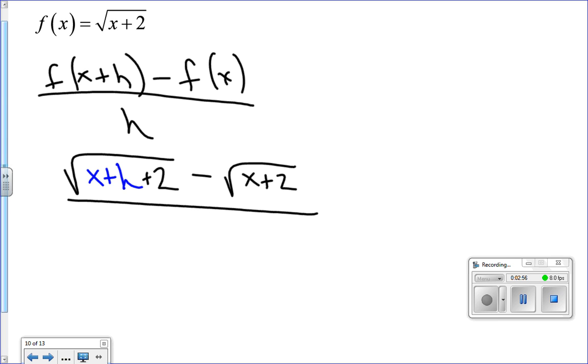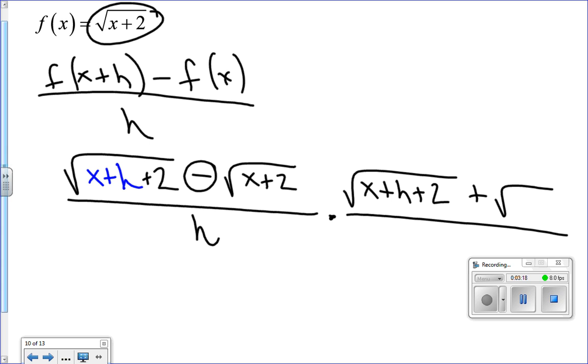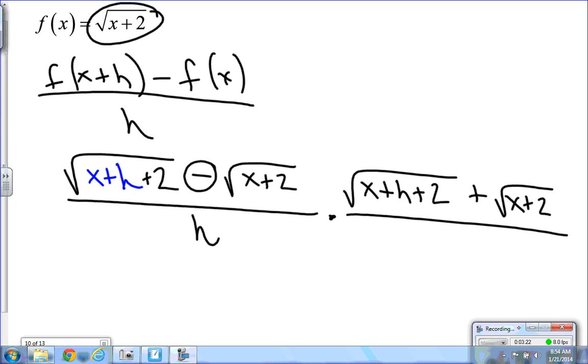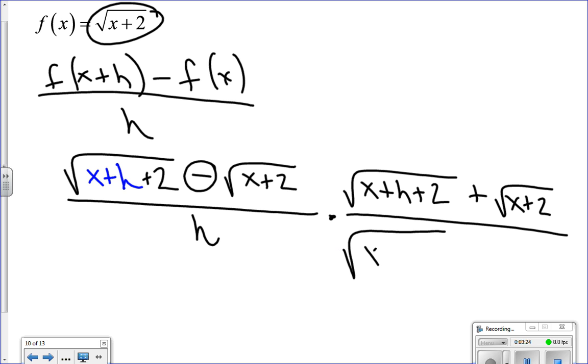With this particular type of function, with square root functions, you're going to want to multiply by the conjugate of the numerator. So it looks like this: I'm going to multiply by square root of x plus h plus 2, and this minus sign becomes a plus sign. Now to pay for that, I still have to multiply the bottom by that conjugate.